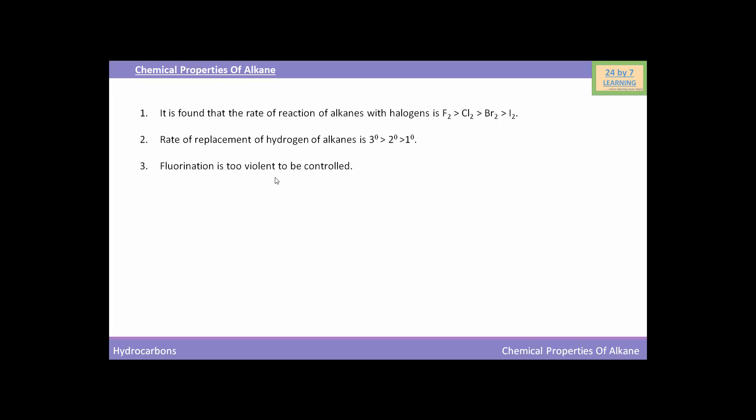Fluorination is too violent to be controlled while iodination is very slow and a reversible reaction. This iodination can be carried out in the presence of oxidizing agents like HIO3 or HNO3. Here are the reactions showing this: you can see methane when will react with iodine then in the reversible reaction you will get CH3I that is methyl iodide and here as a byproduct you will get HI that is hydrogen iodide. This hydrogen iodide when will again react with HIO3 then it will form iodine gas and water.